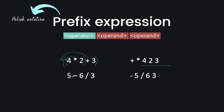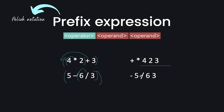Let's see another example. Here, the division sign has higher precedence than the minus sign, so division will be evaluated first, then subtraction. I put brackets around the division operation first, then move the operator outside the bracket. Then for the outer expression, I move the minus sign out. So the prefix notation will be: minus, 5, division sign, 6, 3. This is the prefix notation for this infix operation.